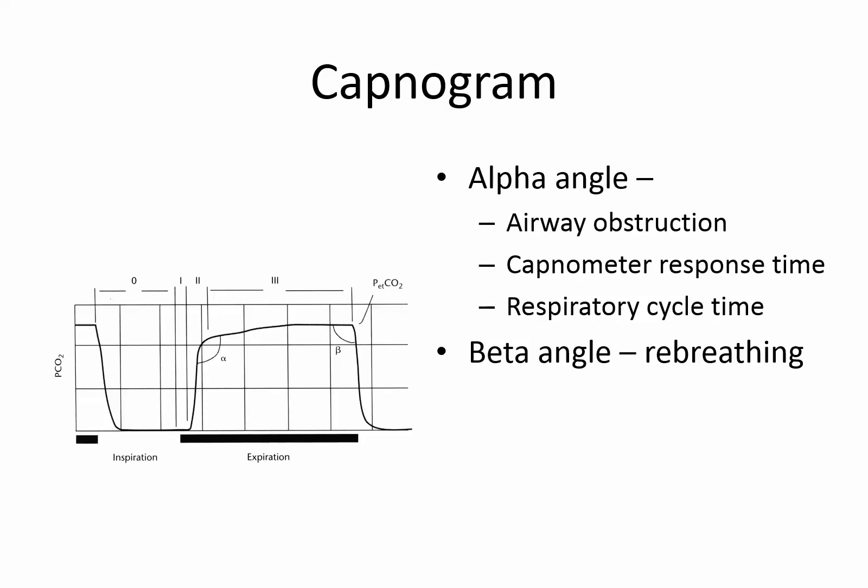One of the most interesting features people discuss is the angles at the corners of the CO2 waveform. The alpha angle is supposed to be abnormal in the presence of airway obstruction and reflects capnometer response time, whereas the beta angle represents rebreathing. We'll see both of these in some abnormal CO2 waveforms as we look at those.